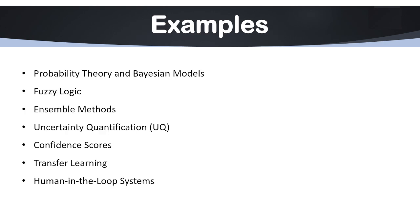Now let's talk about the examples. These are the key strategies for managing uncertainty in AI models. The first key strategy is probability theory and Bayesian models.